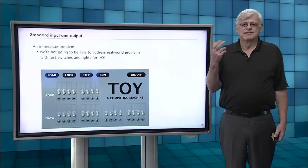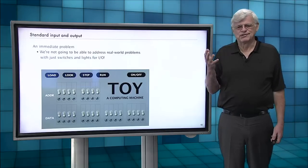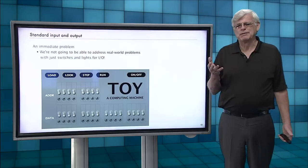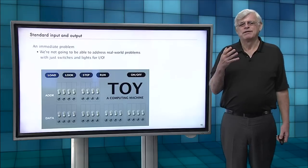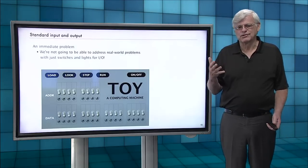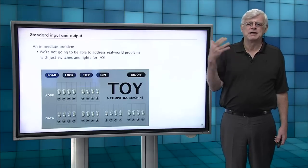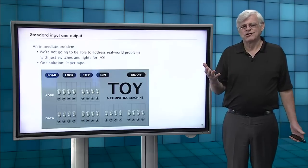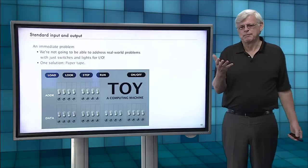But the other thing is input and output. It's one thing to implement a program with switches and lights, but to input data with switches and lights, people knew right away it's just not going to work. So one of the very first things that happened on all the earliest computers was to have some way to get data from the outside world into the machine.